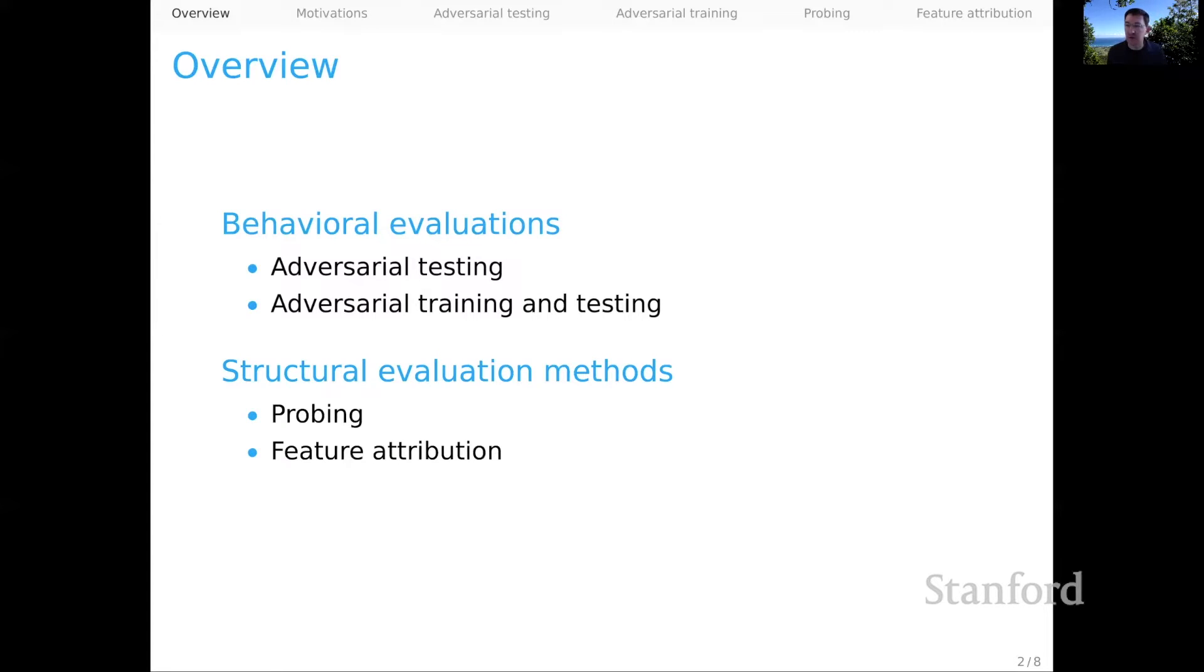And then we're going to move beyond behavioral evaluations to talk about what I've called structural evaluation methods. These include probing and feature attribution. And these are techniques that you could use to peer inside your system and gain an understanding of what its hidden representations are like and how those representations are impacting the model's predictions.